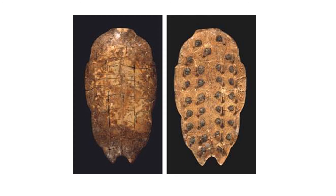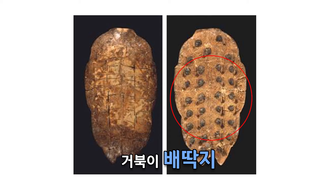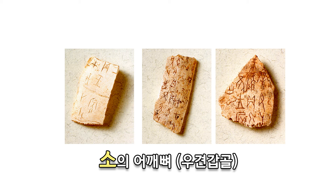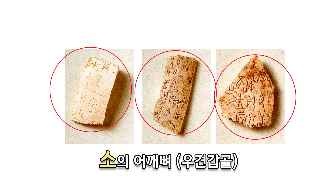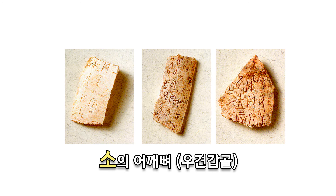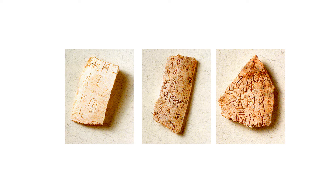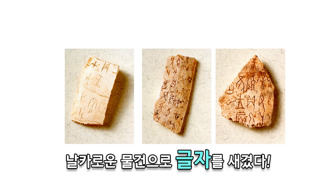이게 거북이 배딱지입니다. 검게 보이는 게 다 점을 친 흔적들이고, 이건 소의 어깨뼈인 우 견갑골이라고 하죠. 굉장히 많은 글자들이 새겨진 것들이 발견됐는데, 놀라운 것은 이 갑골문 하나의 평균 사이즈가 가로 세로 1cm입니다. 짐승의 뼈에 날카로운 짐승의 뼈를 갈아서 새겼는데, 청동기 시대도 아니에요. 그럼에도 불구하고 변별력이 있다는 점에서 굉장히 놀랍죠.